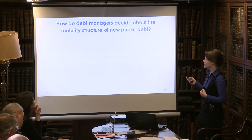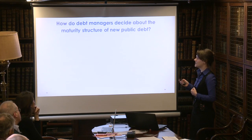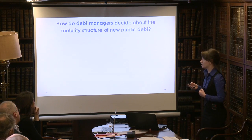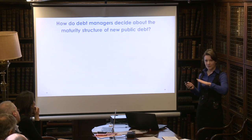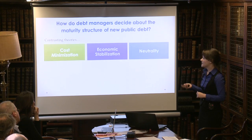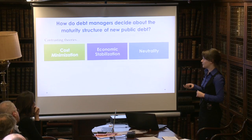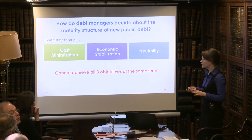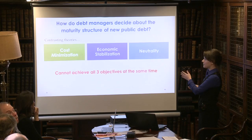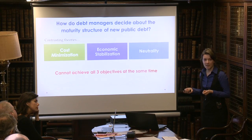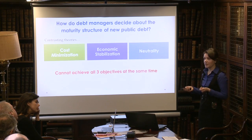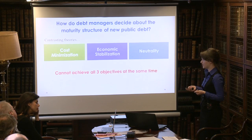So the question I want to address is: how do debt managers decide about the maturity structure of new public debt? It's a straightforward first-pass question. And I look at contrasting theories: cost minimization, economic stabilization, and neutrality. I'm going to walk you through how, if these are the three objectives that sound desirable, all three cannot be achieved at the same time, so a government has to choose from some of them or a combination.